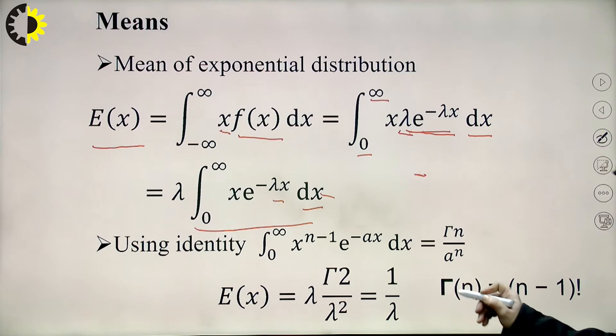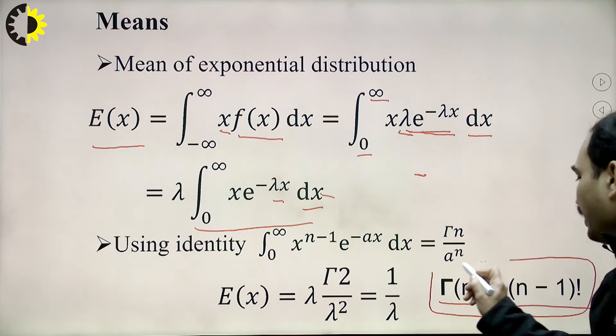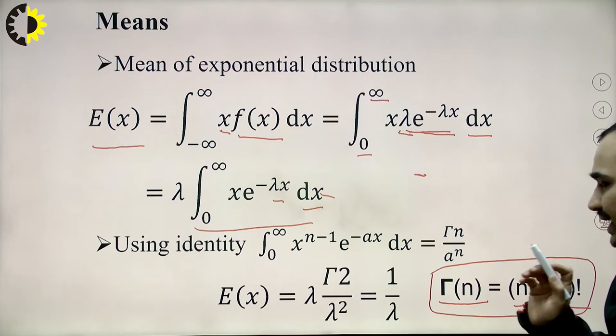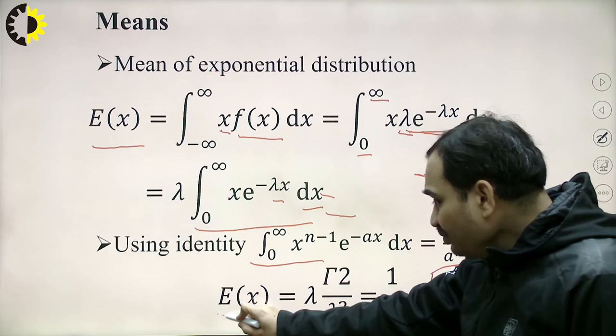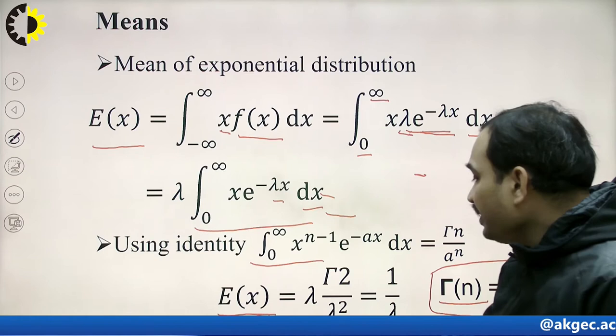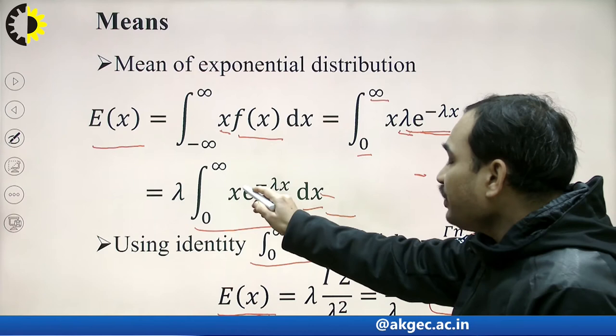Using the identity: ∫₀^∞ x^(n−1) e^(−ax) dx = Γ(n) / a^n. The relation between gamma and factorial is Γ(n) = (n−1)!. Implementing this identity here, we have the expectation of x given by λ · Γ(2) / λ².